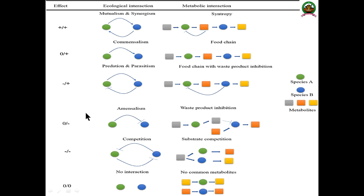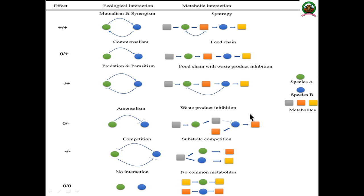In amensalism, the effect is zero-minus: one organism is not getting any benefit, but the other is adversely affected. One organism produces a metabolite, and due to the production of that metabolite, the other organism is negatively impacted — waste product inhibition is the example here. So one organism is not affected but the other is — that is amensalism.